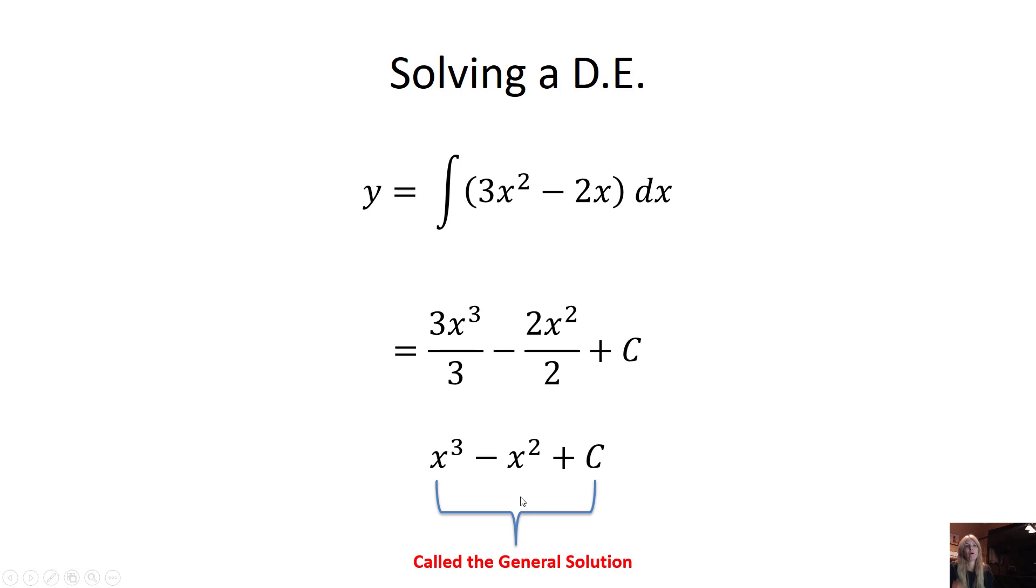So this is what we've been doing before, where we have a derivative, in this case not a function with a variable, and we can find its antiderivative. But what if we actually have a function?